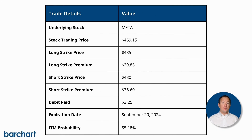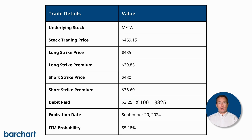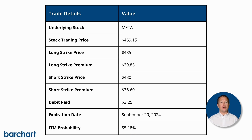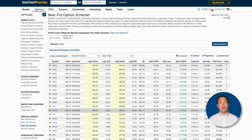For this trade, the long put strike is $485, for which you'll pay $39.85. The short put strike will be $480, and you'll receive $36.60, making a net debit of $3.25 per share, or $325 per contract. The trade also has a 55.18% chance of expiring ITM, decent odds, and it'll expire on September 20th, 2024 — plenty of time to adjust if things don't go to plan.